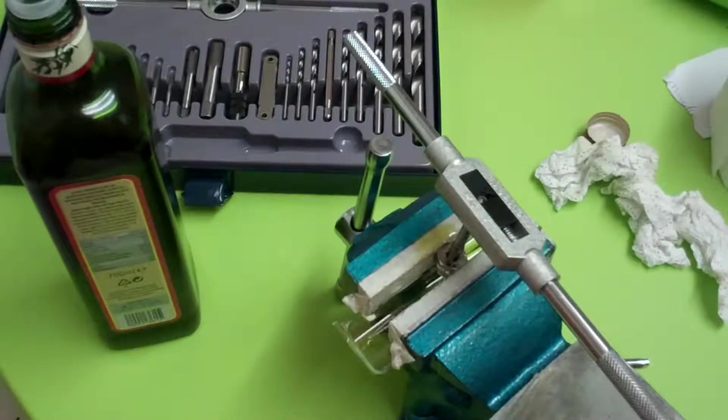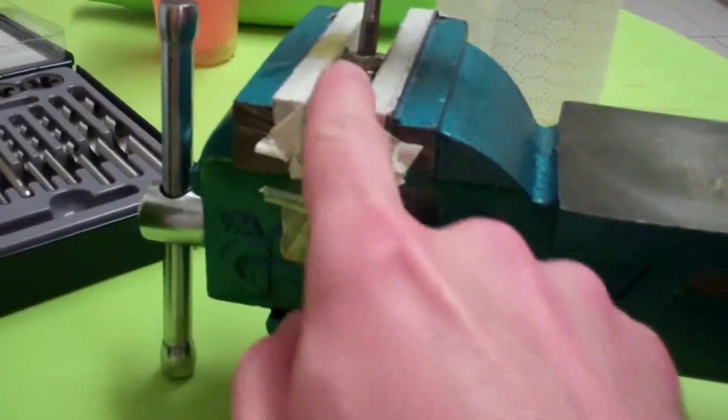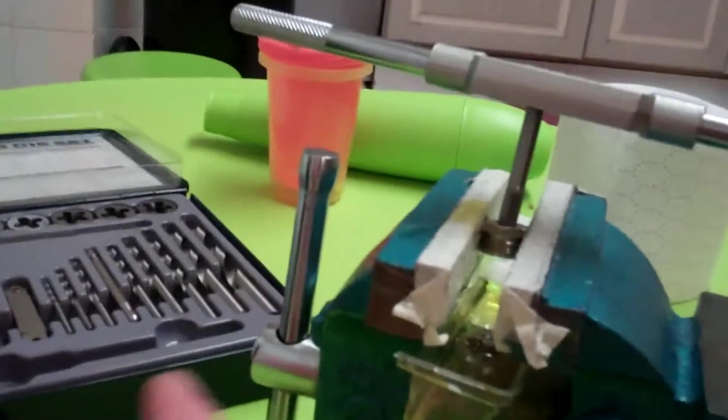And in this case, you can see, if I lower the camera, that I've got the bit of the PL259 into my vise, and I'm just tapping it out.